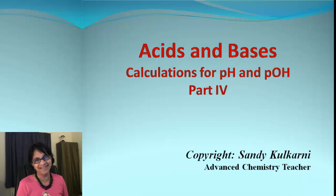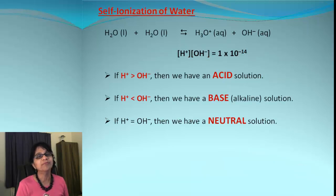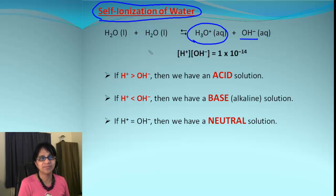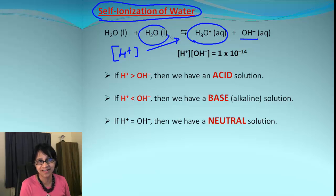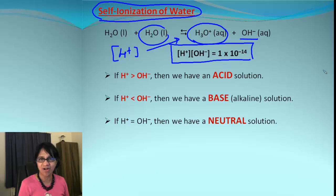Hey kids, Miss Kulkarni here. Let's continue with our acids and bases and learn some calculations about pH and pOH. First, let's find out what self-ionization of water means. By itself, water can get ionized into hydronium ion and hydroxide. Hydronium ion is actually formed from hydrogen ion dissolving in water, so we can use hydrogen and hydroxide ion as the products for self-ionization.